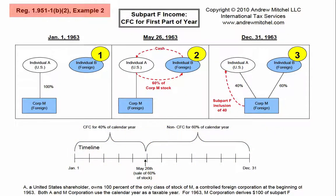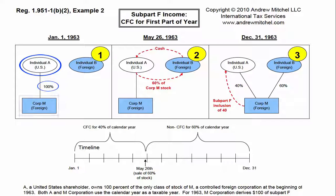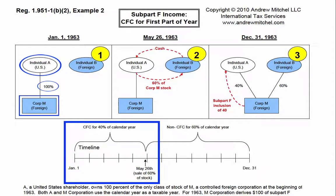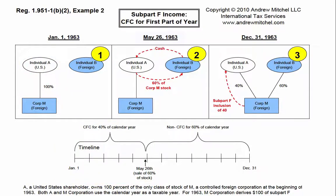In Example 2 of Regulation 1.951-1(b)(2), Individual A was a U.S. individual who owned 100% of Corp. M, a CFC, from January 1, 1963 to May 26, 1963. On May 26th, Individual A sold 60% of the shares of Corp. M to Individual B, who was not a U.S. person.